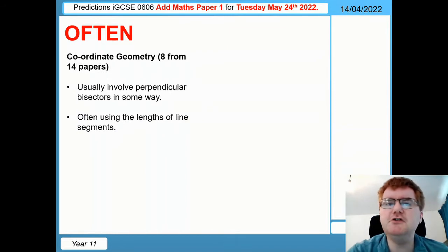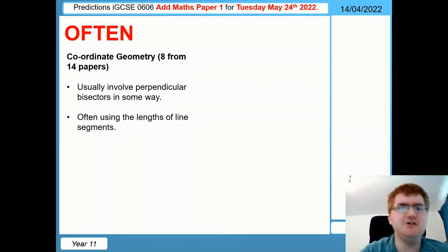On to coordinate geometry now. This usually involves perpendicular bisectors in some way - that seems to be the most common question - and then use the length of line segments in some way to extend your knowledge further. It doesn't differ too much from the normal IGCSE 0580 course, but they just try and put a few harder questions towards the end of the sub questions there.